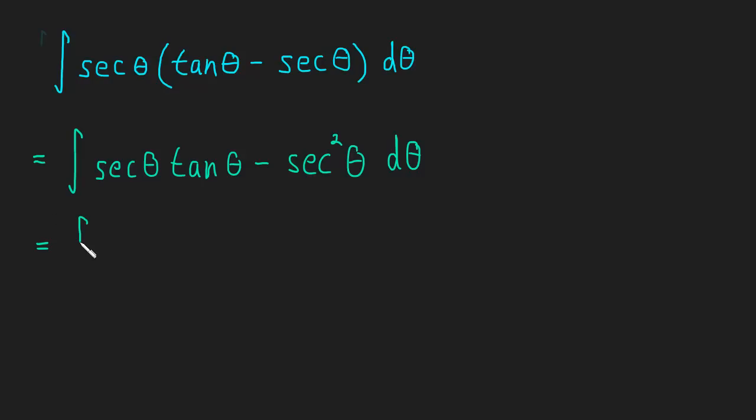So this is going to be secant theta. So the derivative of secant is secant tangent. And then minus tangent theta because the derivative of tangent is secant squared.